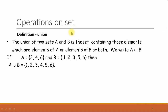Operations on sets. The first operation here is union. What is union of two sets? The union of two sets A and B is the set containing those elements which are elements of A or elements of B or both. We can write A union B. For example, A is a set containing elements 3, 4, and 6. B is another set containing the elements 1, 2, 3, 5, and 6. Then the union of A and B will be 1, 2, 3, 4, 5, and 6.